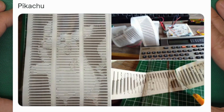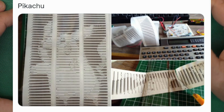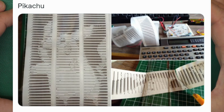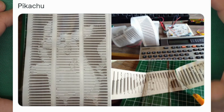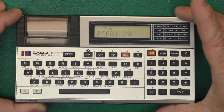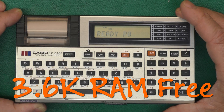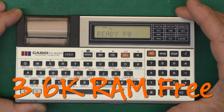Then somebody on Twitter posted pictures of a Pikachu that they pulled the data in from an EEPROM using a tape emulator and then printed it out. I thought, okay, that's cool. How could we do that kind of thing all internal to the pocket computer, which is kind of hard to do because we only have 4k of RAM to work with?